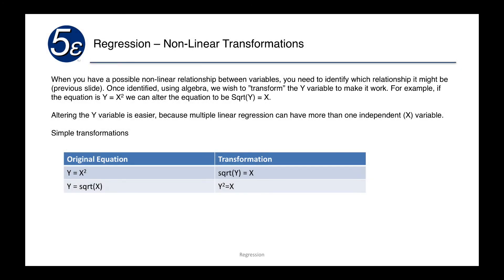When you have a possible non-linear relationship between variables you need to identify which relationship it might be. Once identified, using algebra, we can then transform the y variable to make it work. For example, if we had the two variables and it looked like it was y equals x squared or something close in terms of that curve, we can alter the equation to be the square root of y equals x and do the transformation there.